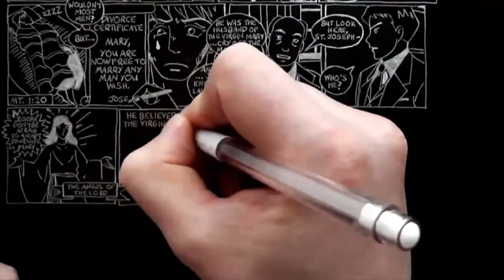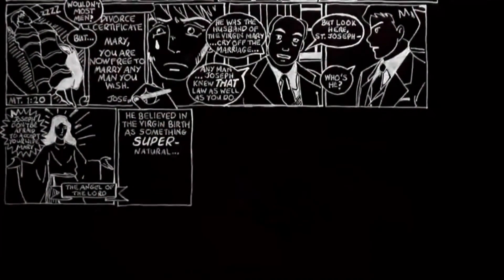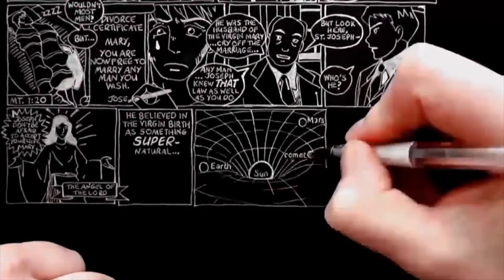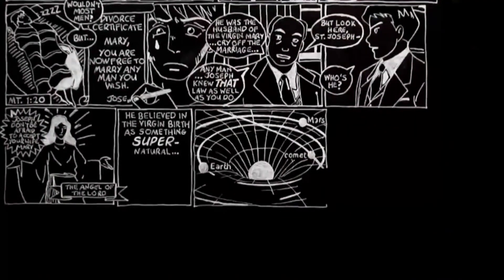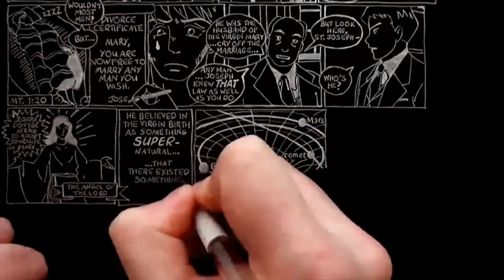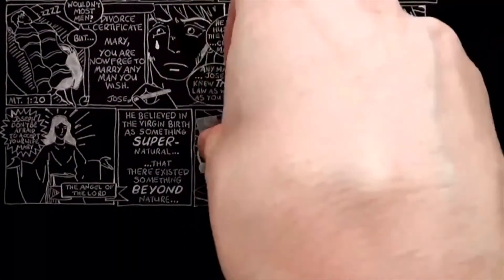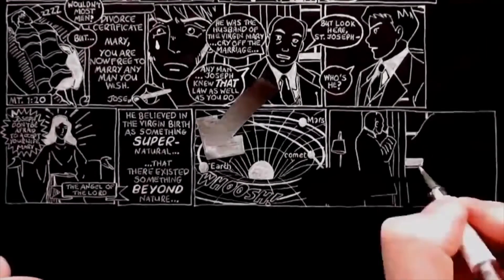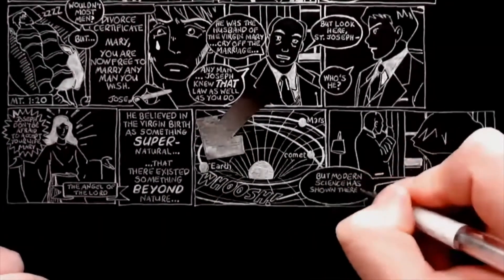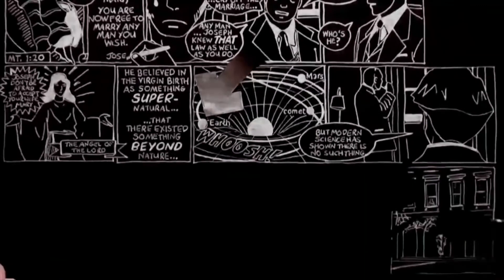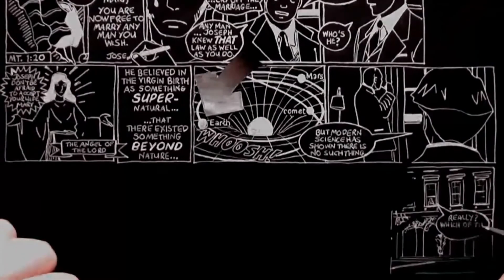He believed in the virgin birth as something supernatural. He knew nature works in fixed, regular ways. But he also believed that there existed something beyond nature, which could interfere with her workings, from outside, so to speak. But modern science has shown there's no such thing. Really? said I. Which of the sciences?